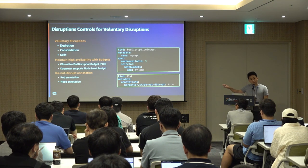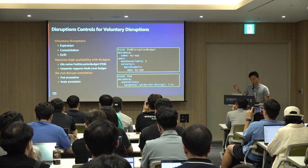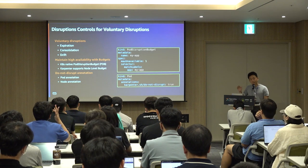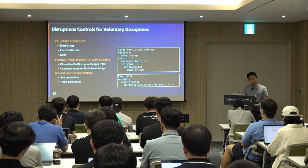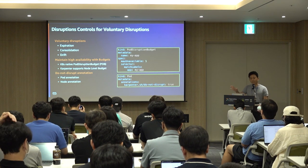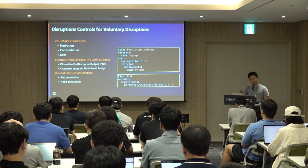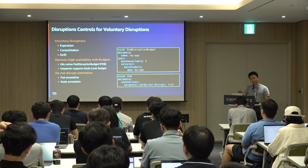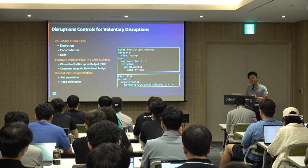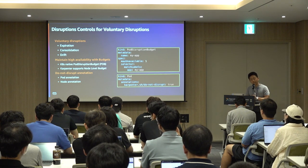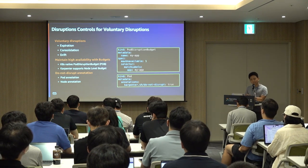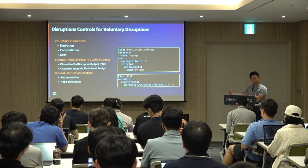For voluntary disruptions such as consolidation and drift, you can use pod disruption budgets to keep a minimum number of replicas always running. If a disruption would violate your PDB, the worker node will not be terminated. Karpenter also supports node-level budgets to control how many nodes terminate at once. You can add annotations on the node or pod — for long-running workloads you don't want disrupted — and those nodes or pods will not be terminated.